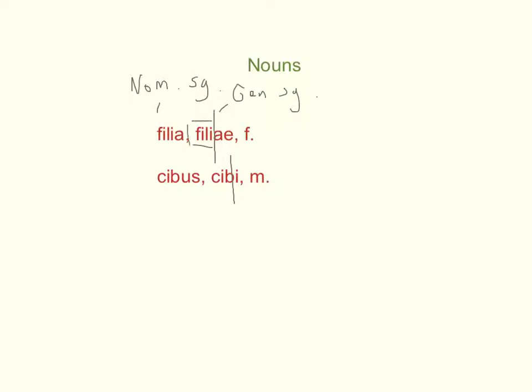In fact, you can always find the stem of a noun, and we'll talk more about what that means later, by taking the genitive ending off of the genitive form. So up here, fili, that's the stem there. And cib, that's the stem there for food. But then after those you need the gender. Here we have feminine, down here we have masculine. If you see nominative form, genitive form, gender, you know you have a noun.